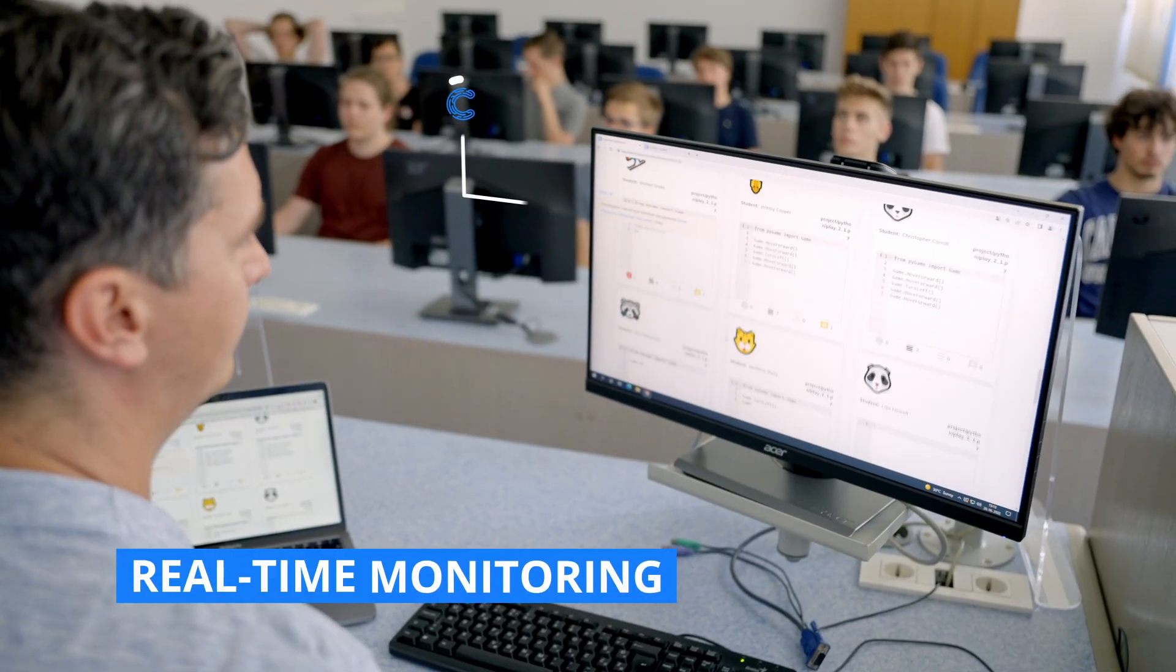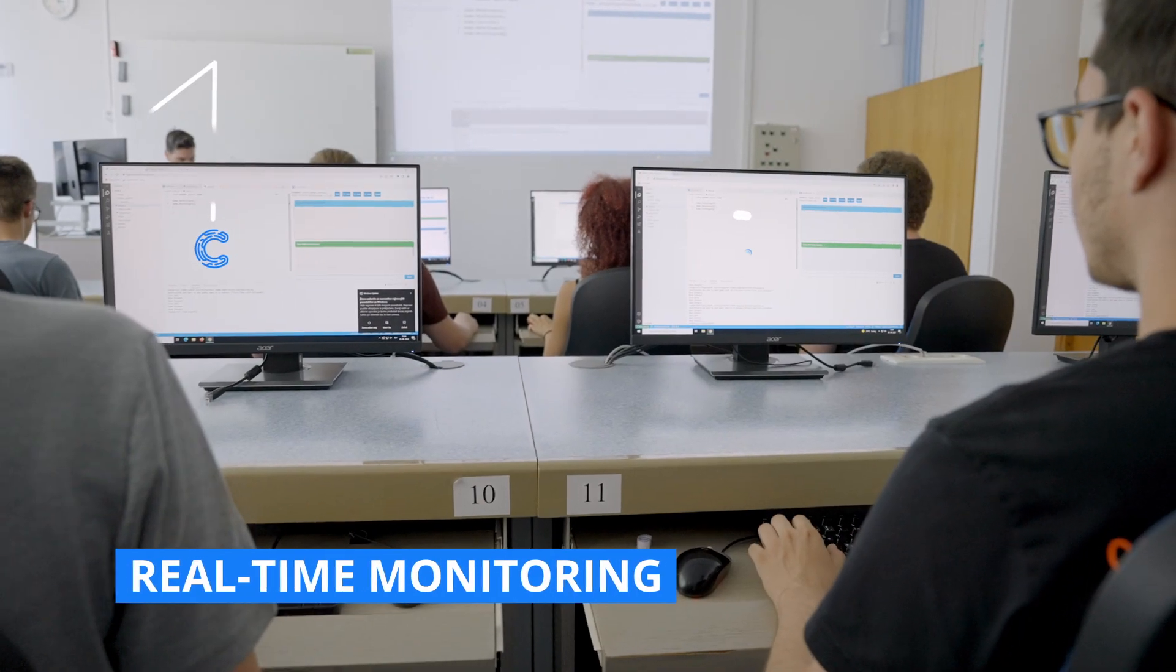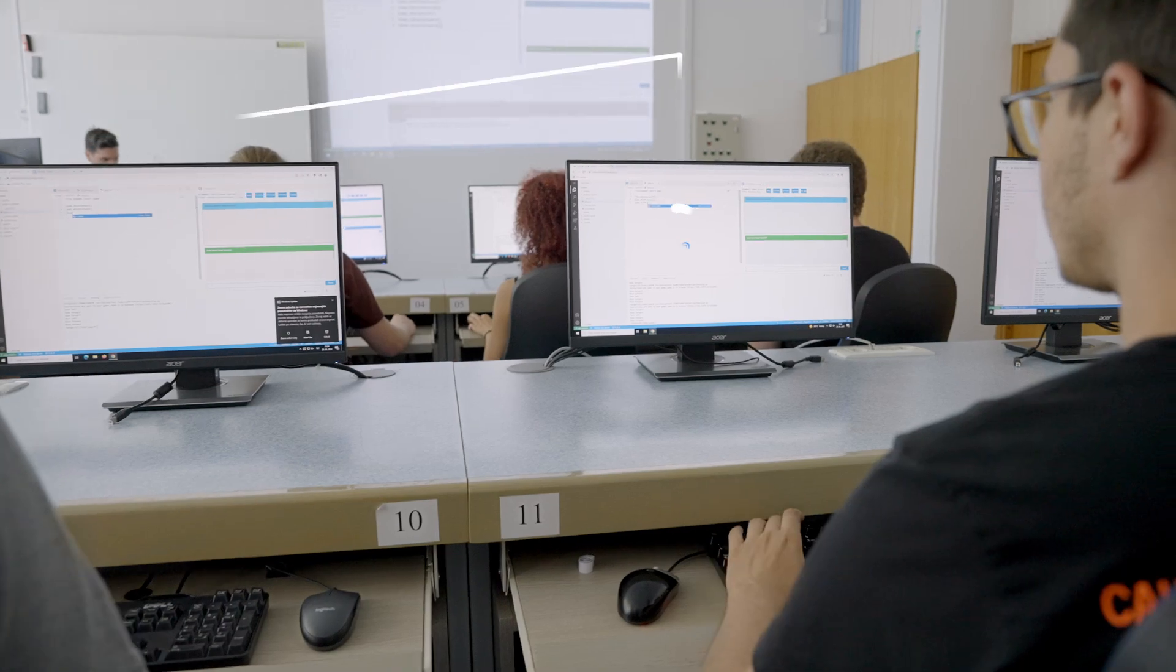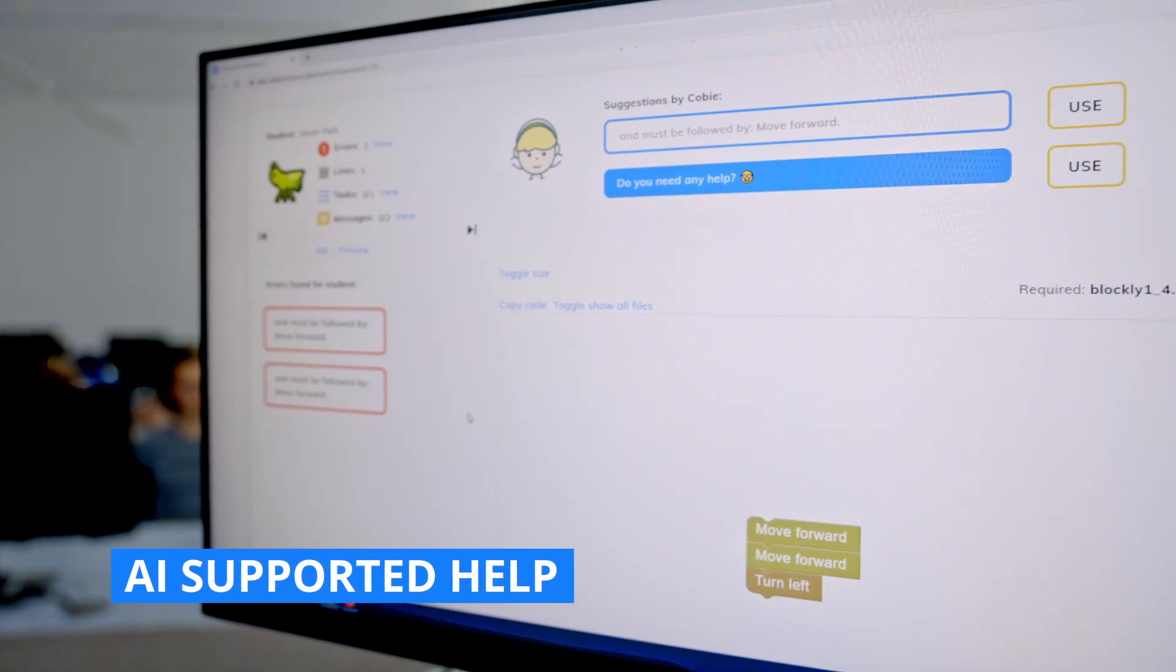As students work, the teacher sees what they're doing in real time and can observe students working on their assignments. Kobi AI checks their code and notifies the teacher of the errors. The teacher can help them using Kobi AI suggestions or directly in the editor.